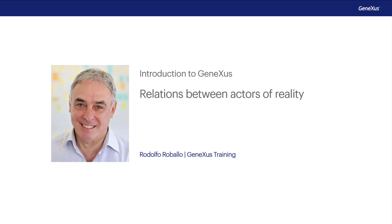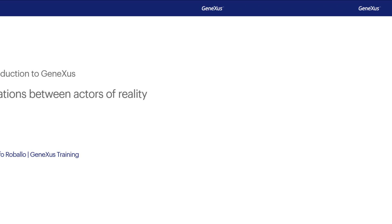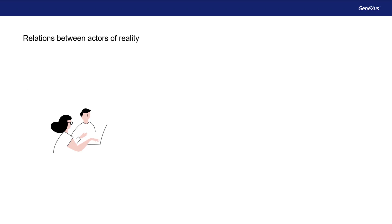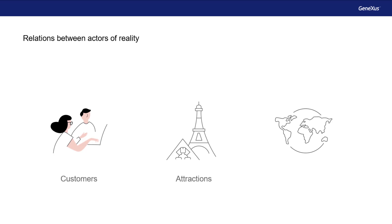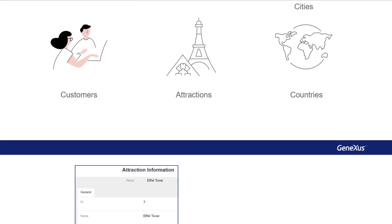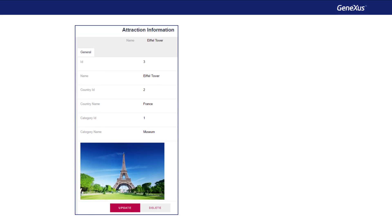In several examples of our travel agency, we see that the actors of reality are related in different ways. For example, when an attraction belongs to a category, and in turn this category can be the category of many attractions.